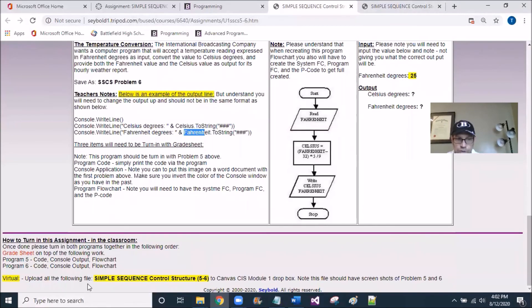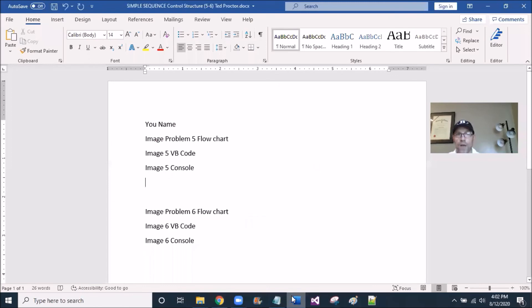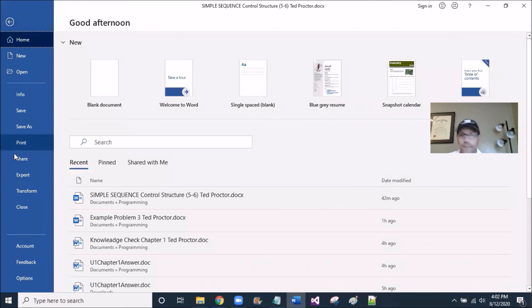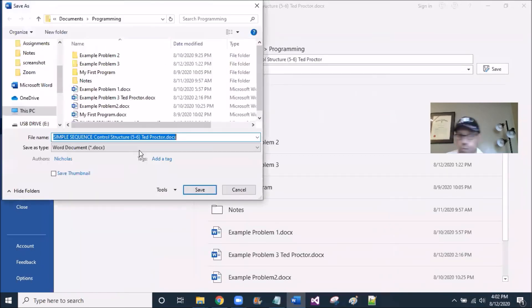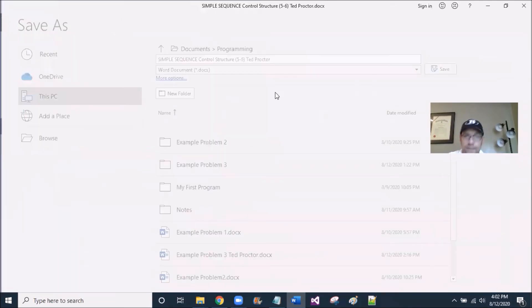And so you're going to have to follow those directions to create that file. So I'm going to give you a look. I have opened up a new document. All right? I've then gone, watch this. I've then gone file, save as, and look at my name when I look at file, save as in this window. I called it simple sequence control structure problem five and six, and I'm giving you my name. But it should be your own name. All right? And you should be saving it right in the program folder. If I continue, look what I have here.